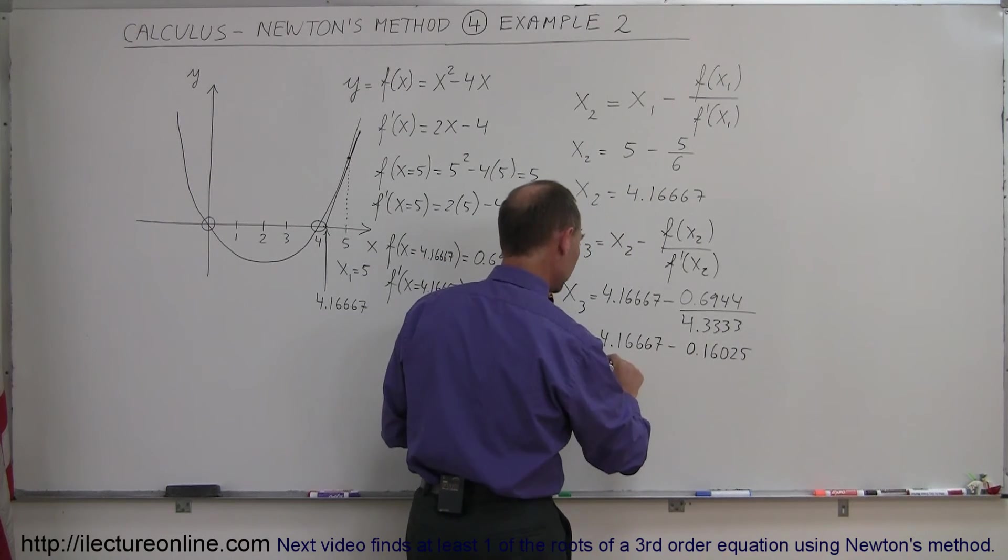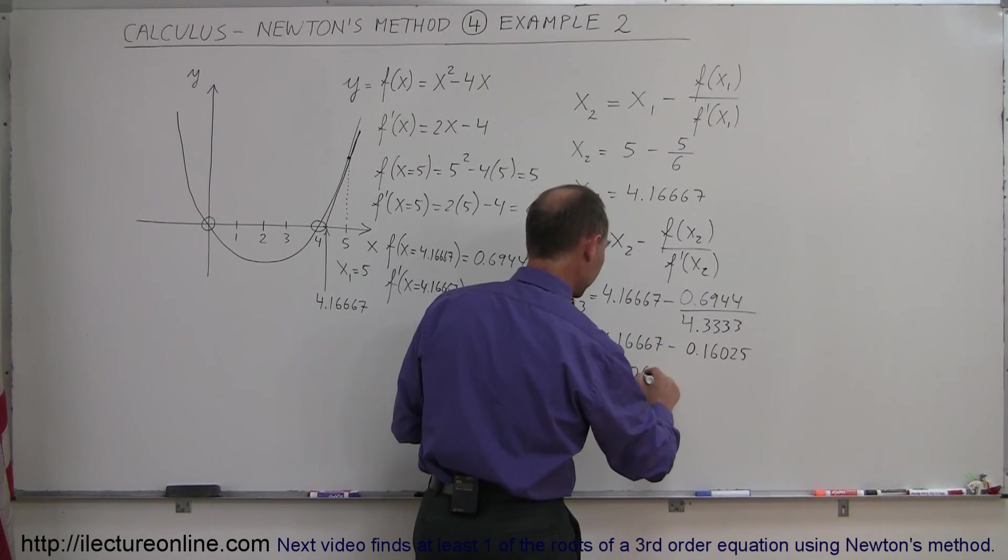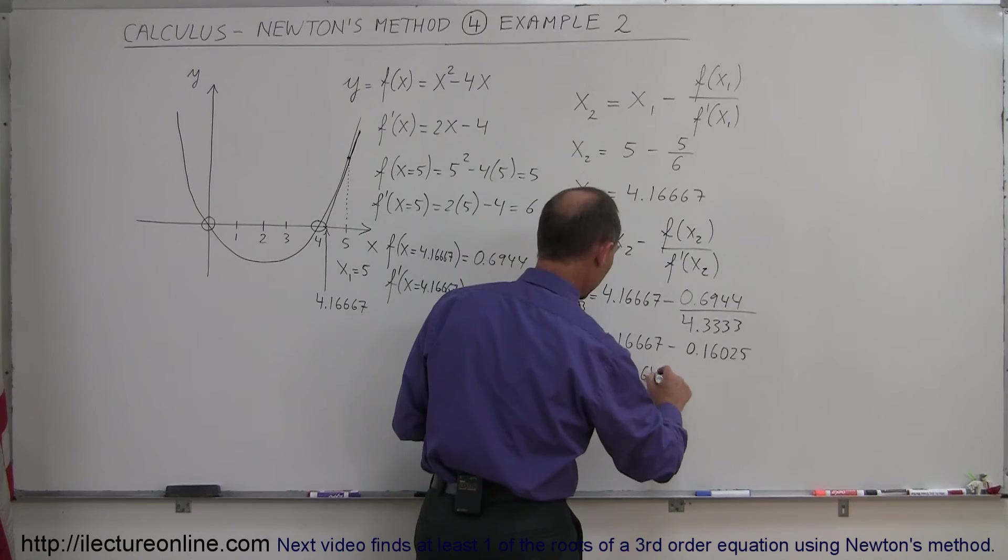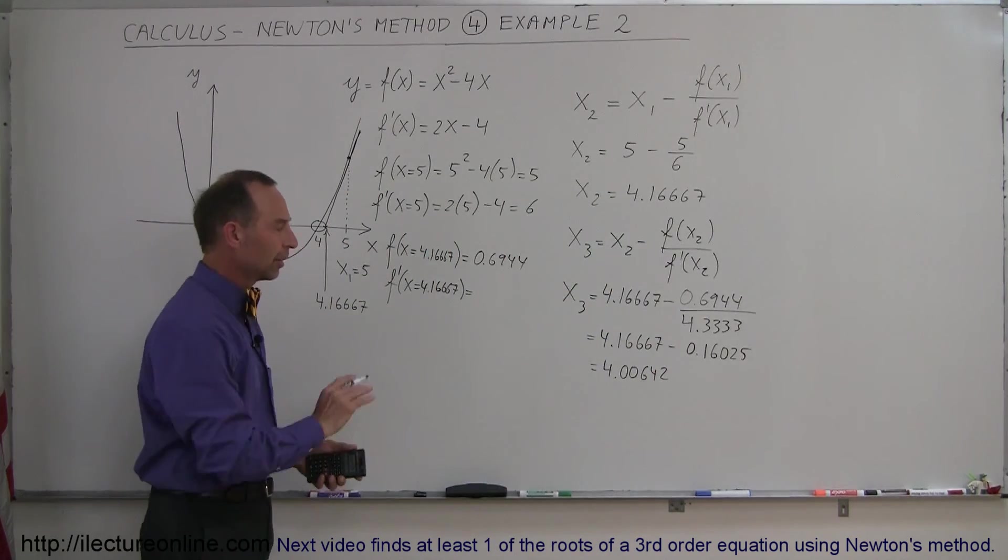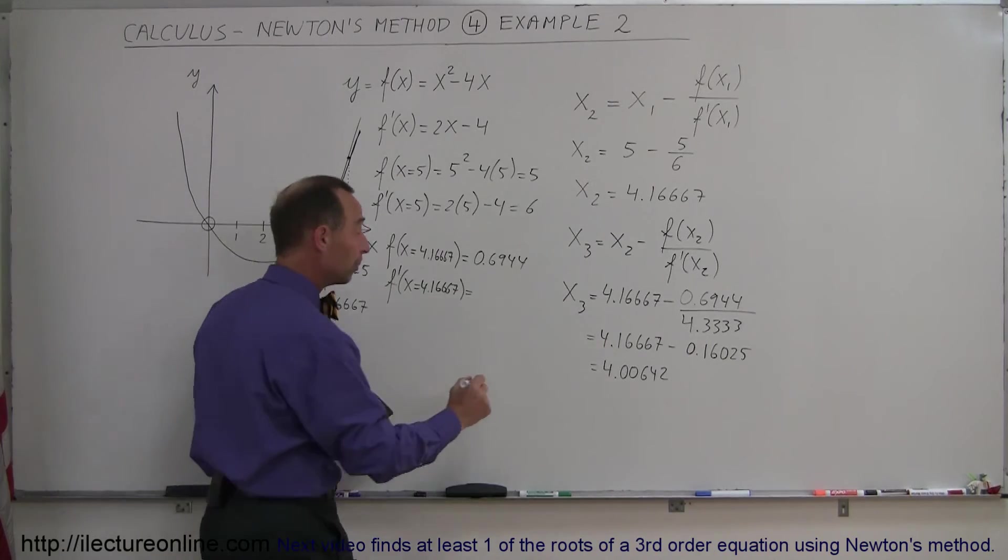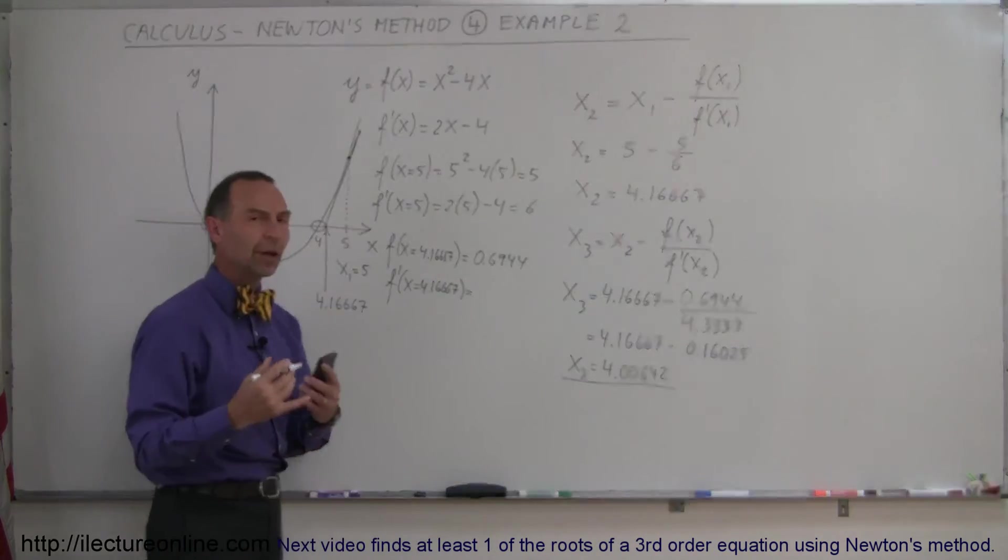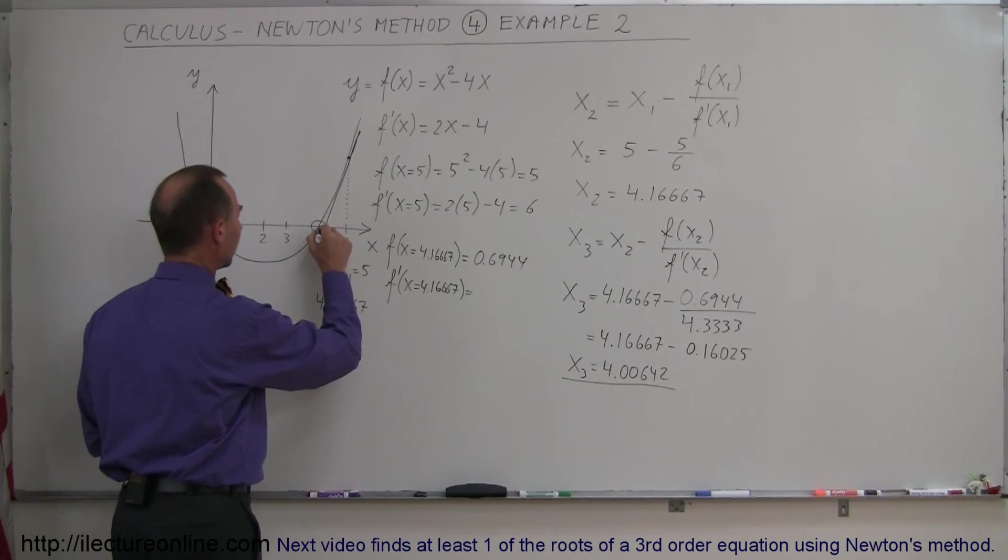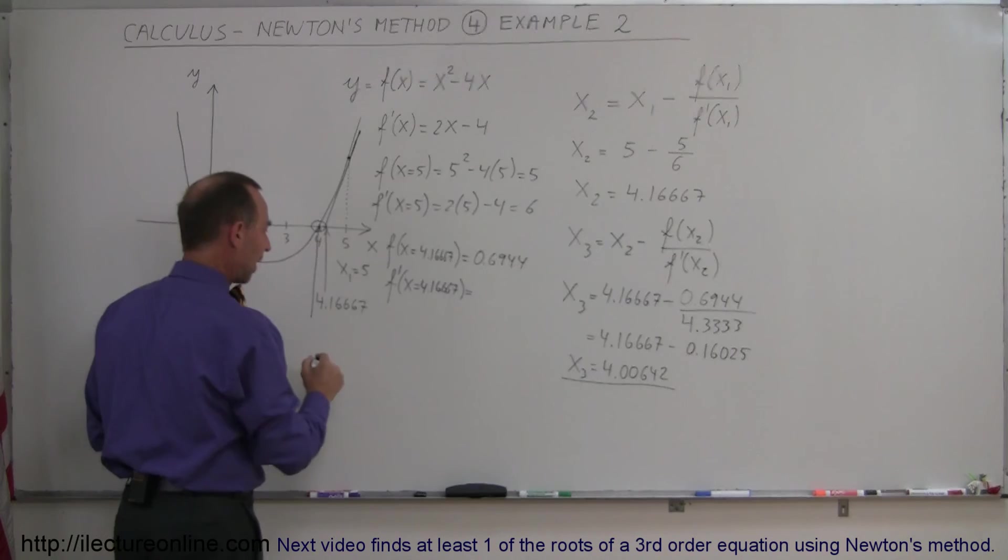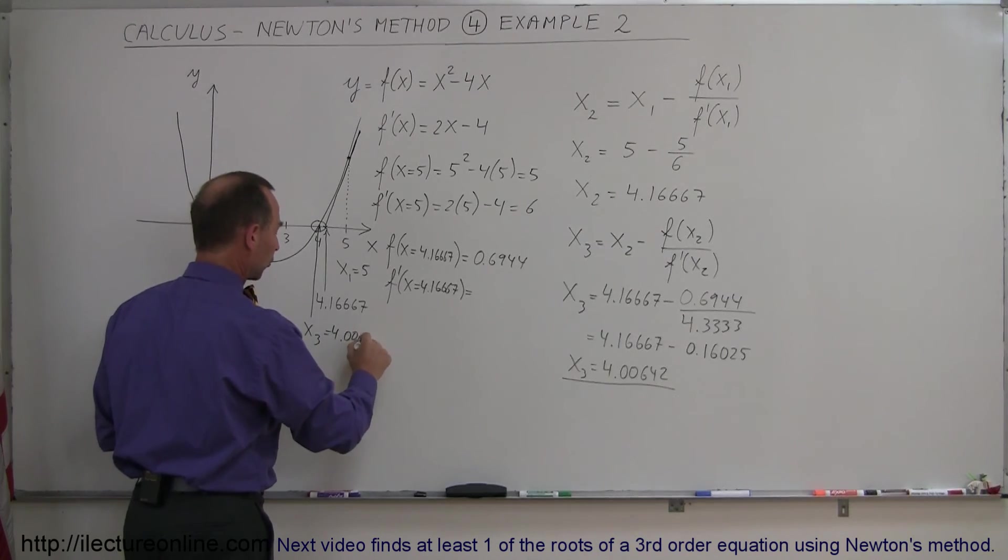We get something close to 4.00642, close enough. Doesn't have to be that accurate, close enough. So now you can see our third point is getting to be very close to our root. We know what our root is, it's 4, so you can see how we very quickly zoomed in to the correct value for the root, so x3 is equal to 4.00642.